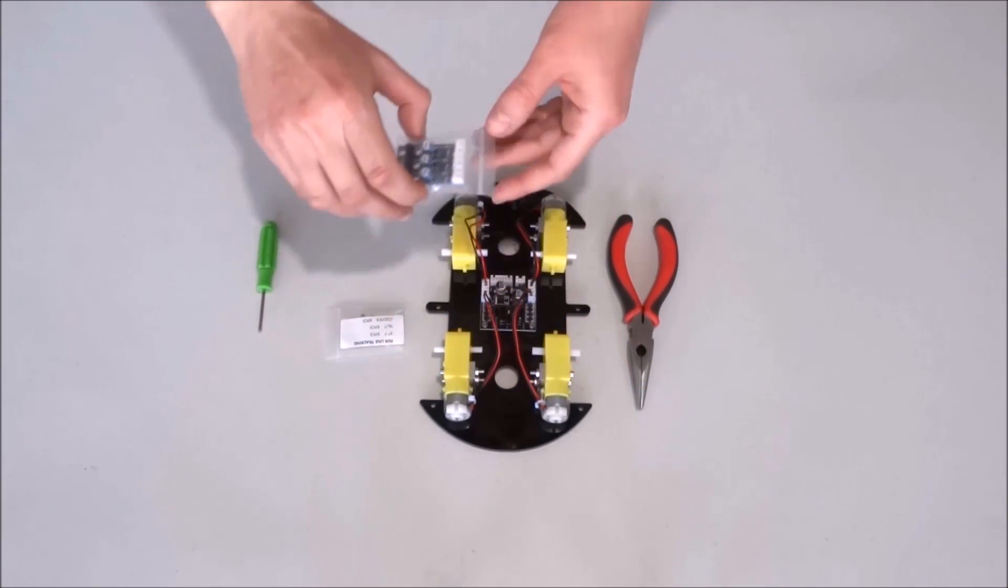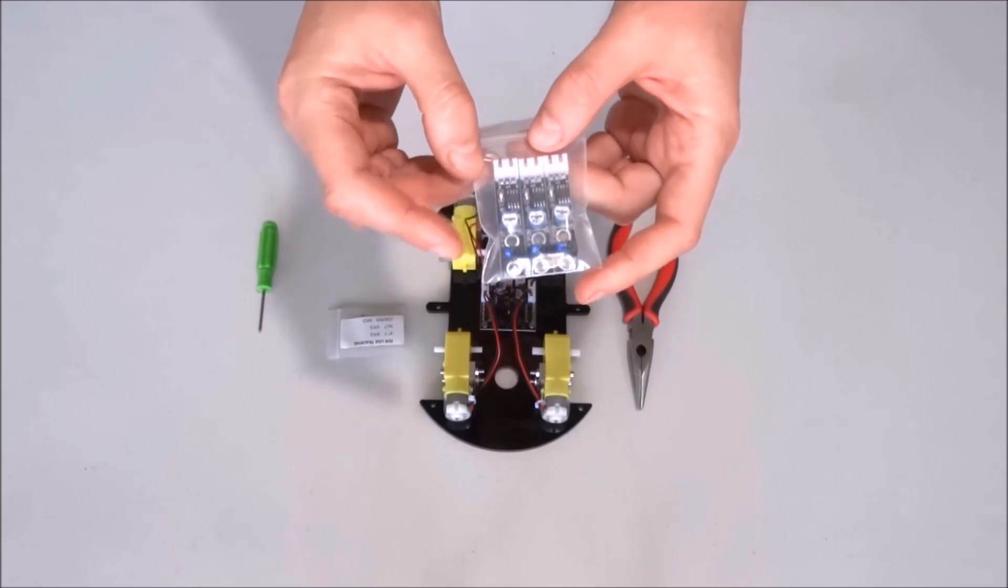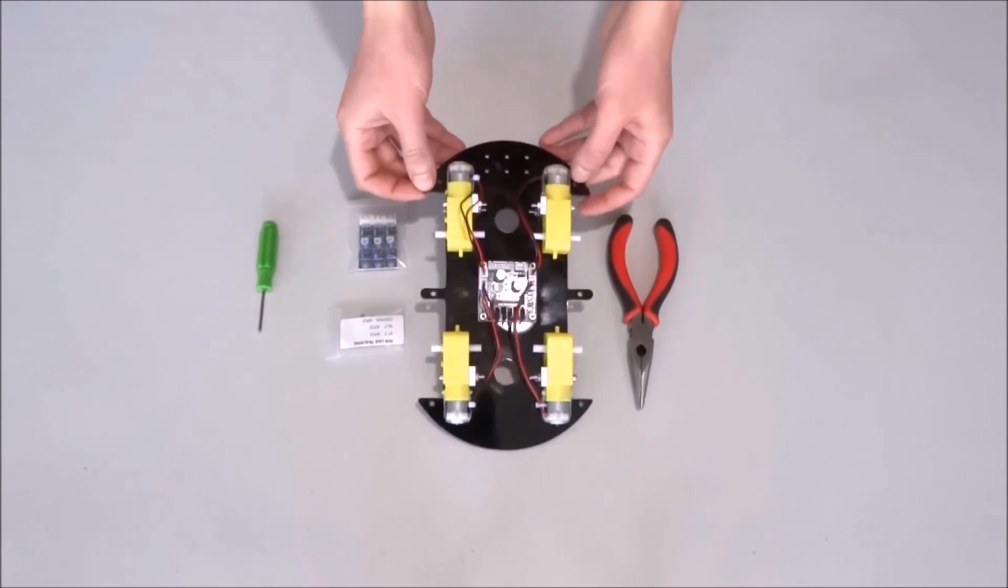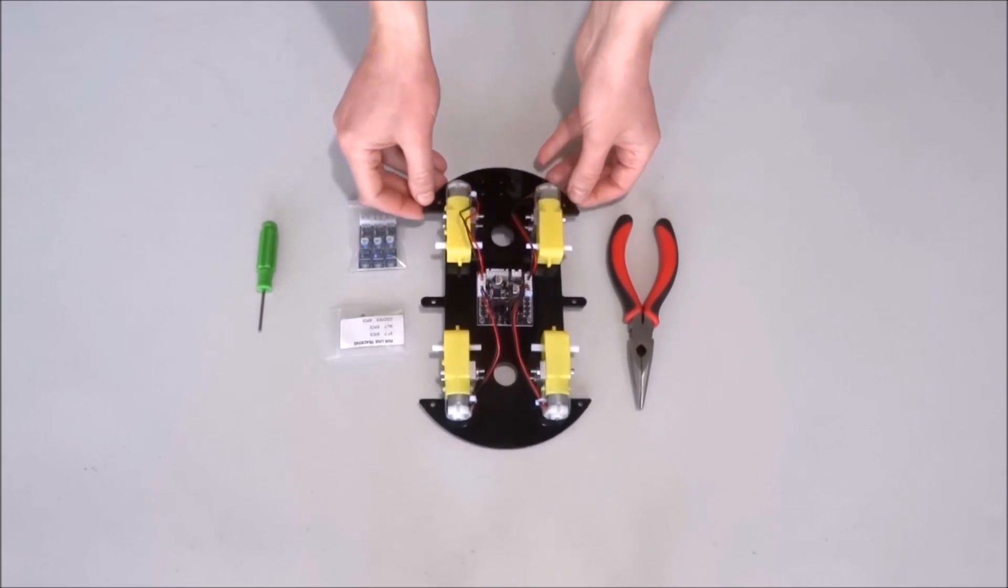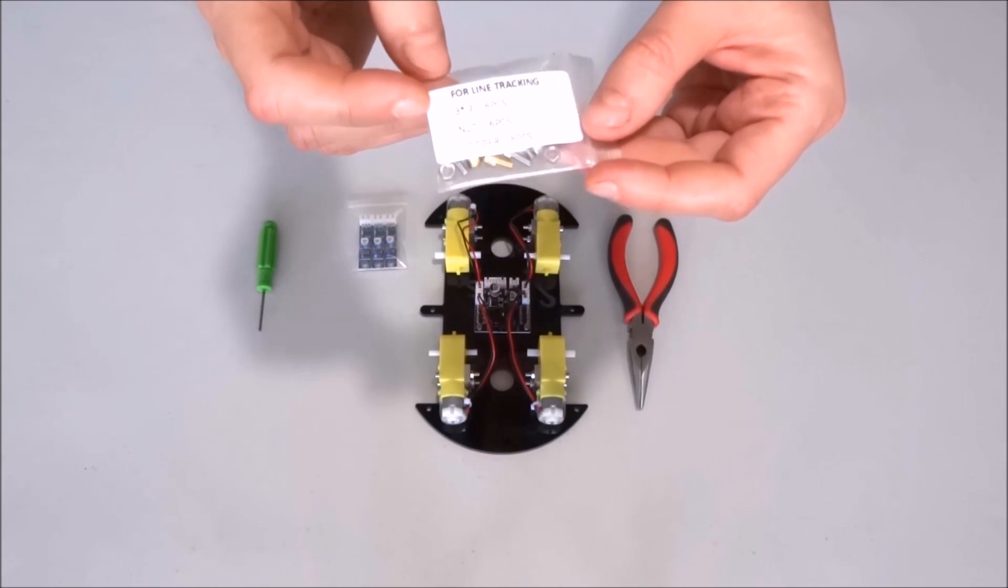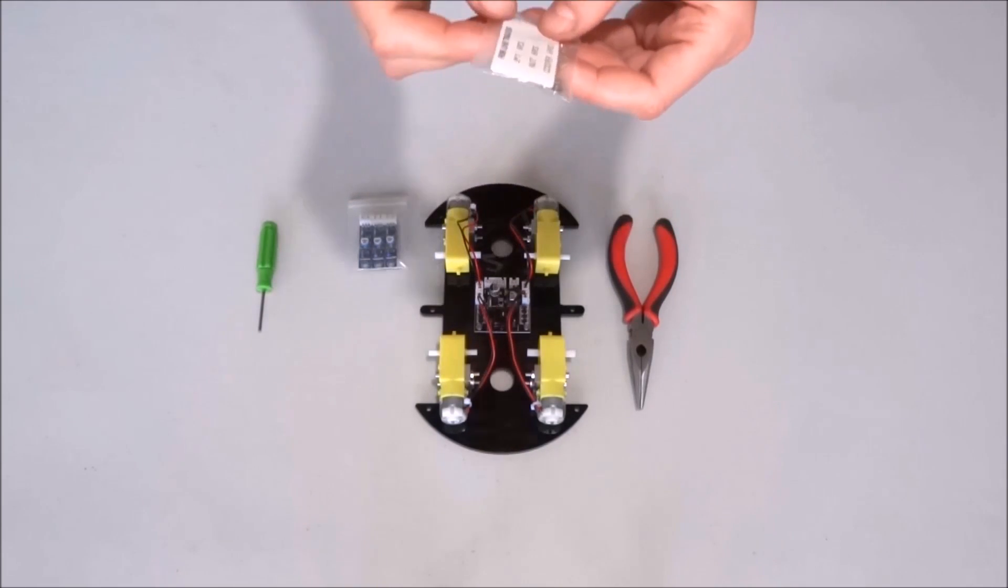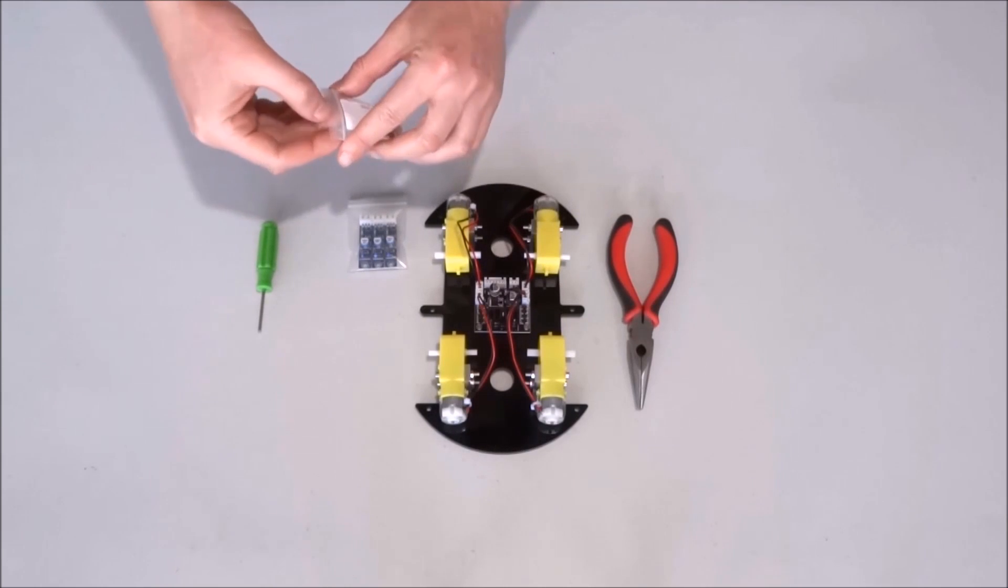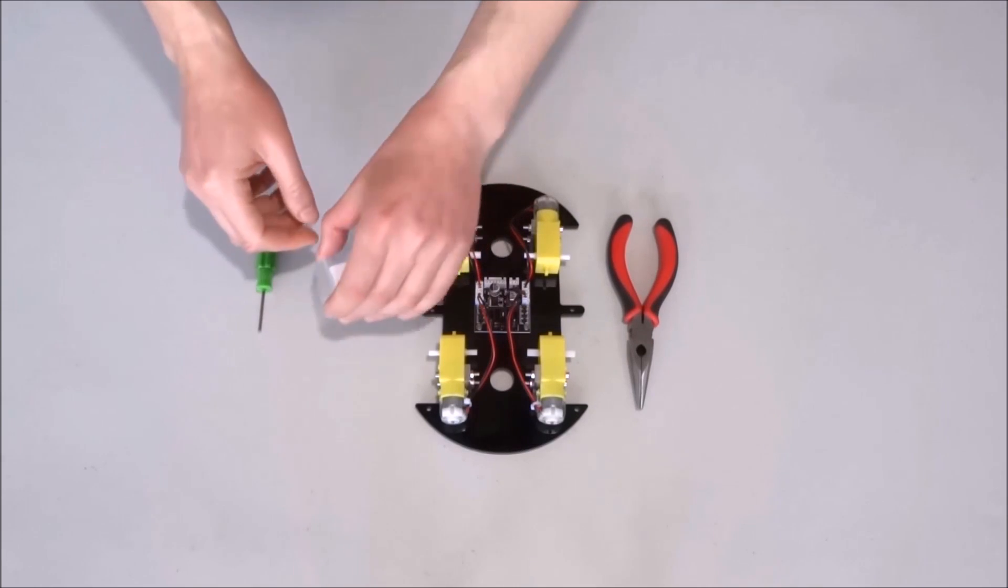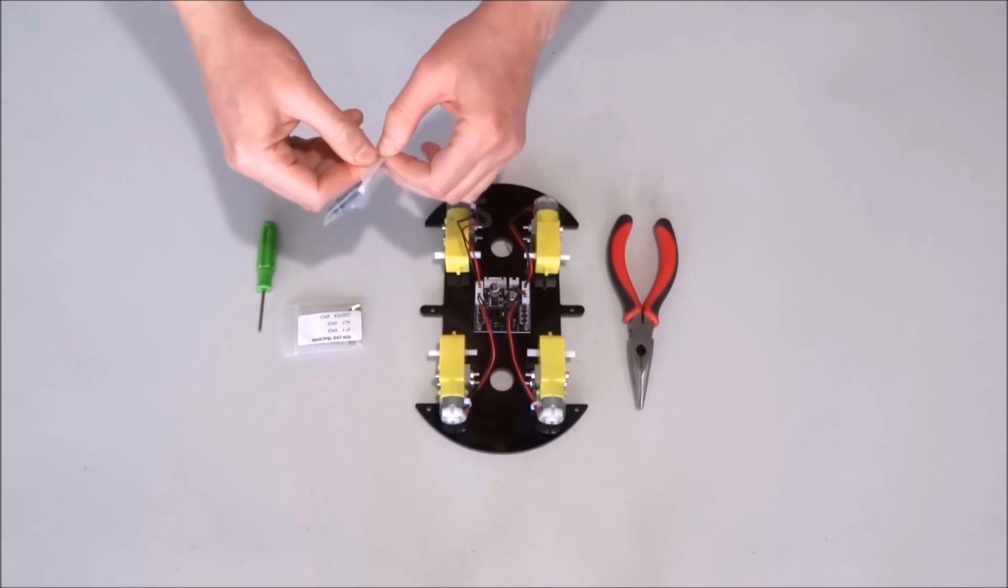Now we can mount the line following sensors to the front of the chassis. For this we'll need this bag labeled for line tracking sensors. We'll take one of the sensors.